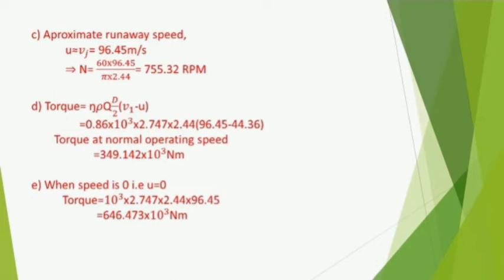Torque at normal operating speed: using the formula T = η ρ Q (D/2)(v1 − v2) and substituting the values, torque at normal operating speed = 349.142 × 10³ N·m.